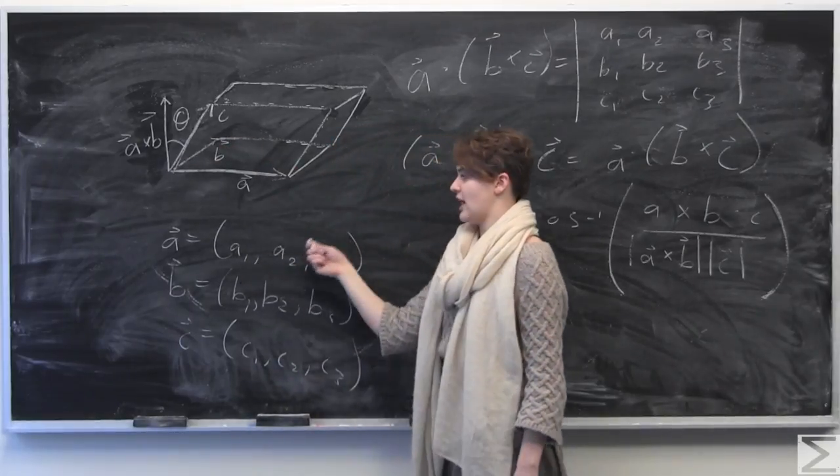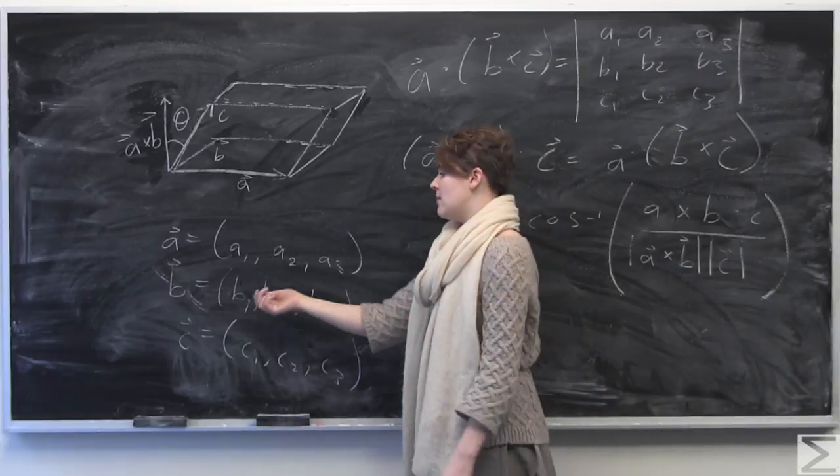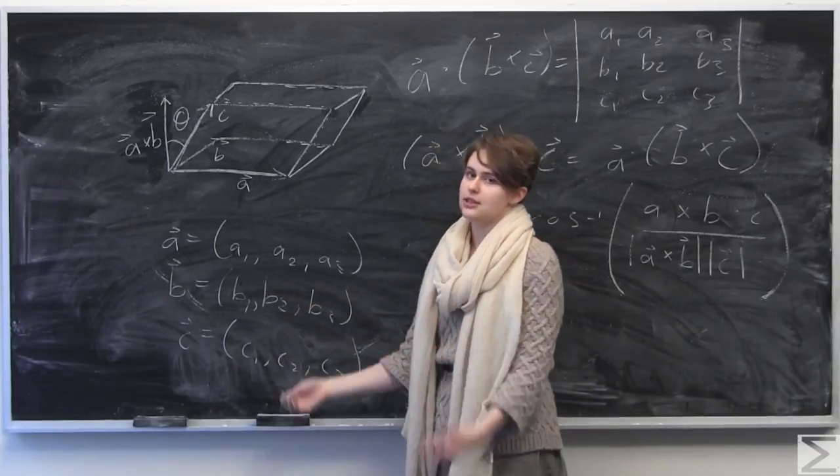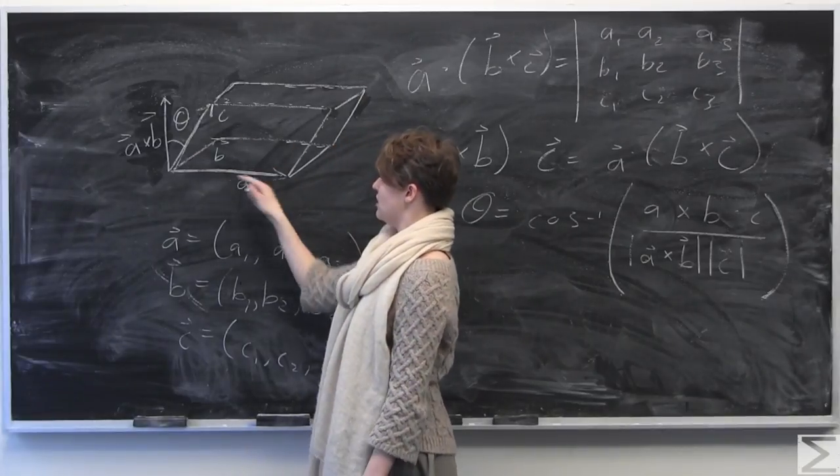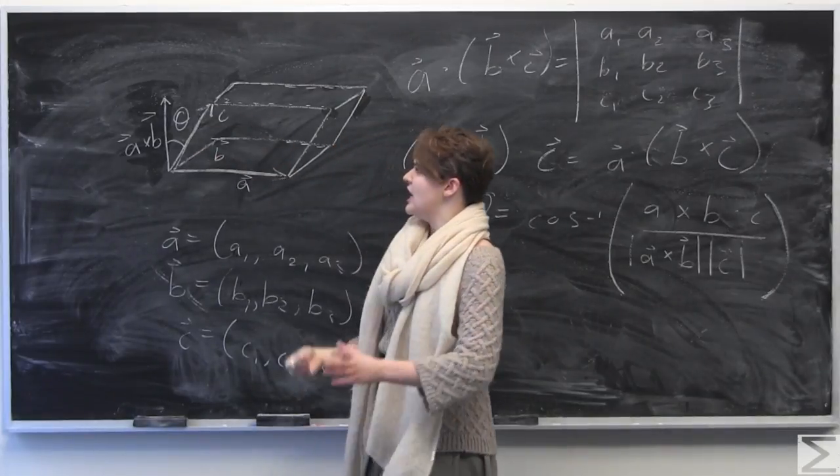So say we're given three vectors: A, where it has three components A1, A2, A3; B with B1, B2, B3; and C is equal to C1, C2, C3. So I just have, for example, here we have the A vector here, B here, C here.